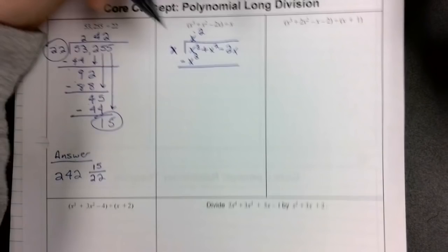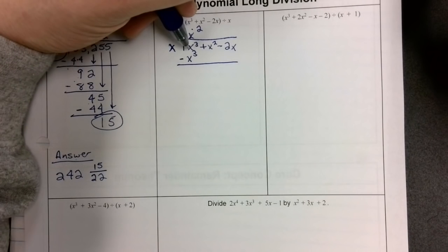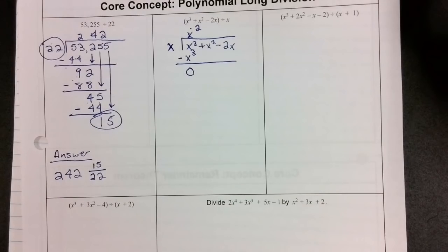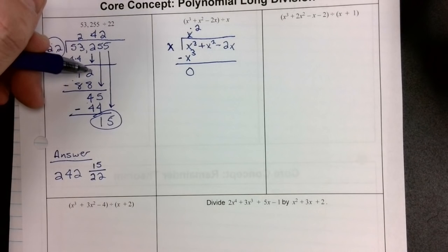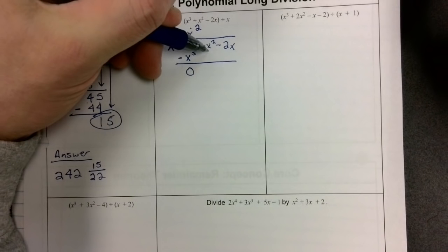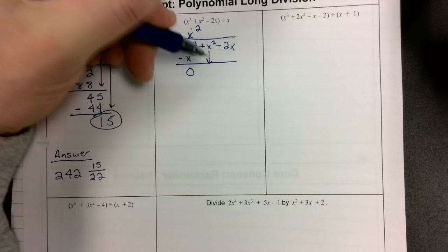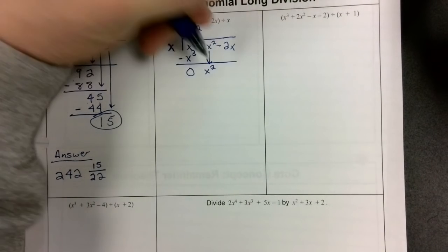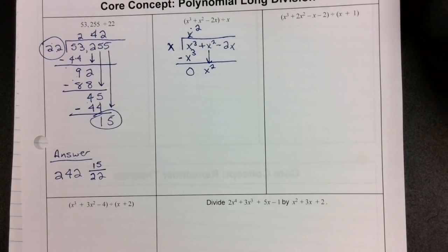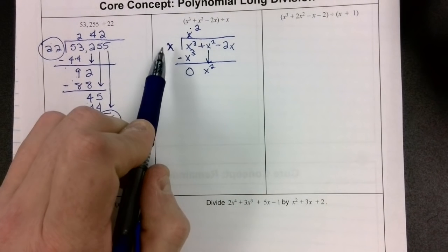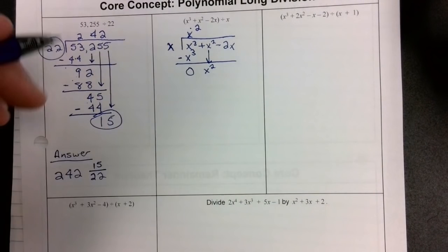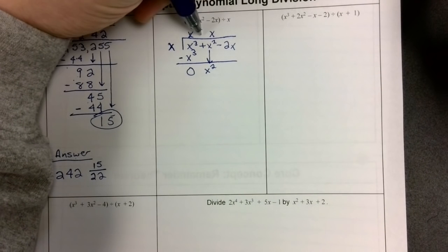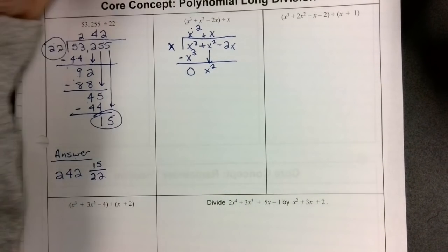x to the third minus x to the third is zero. Then, just like we brought the number down before, we bring down x squared and repeat the process. We say: what do I need to multiply x by to get x squared? The answer is x. We put a plus in between each of the terms because we have a polynomial.